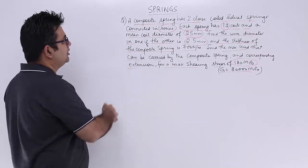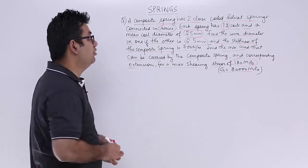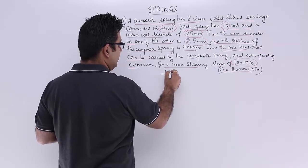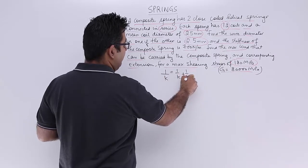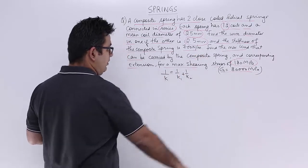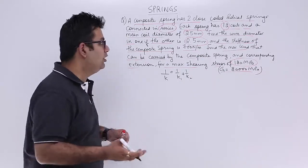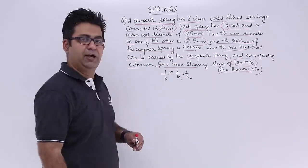Because it is a spring combination in series, you will have your equivalent stiffness as 1/k equals 1/k1 plus 1/k2. Now what is the value of k1 and k2 in terms of capital D and small d?